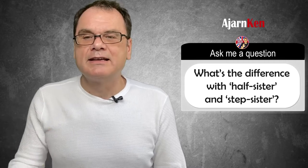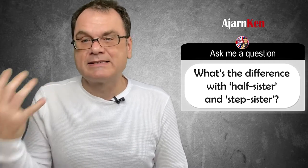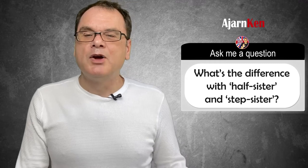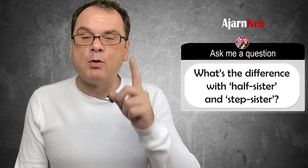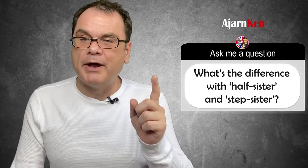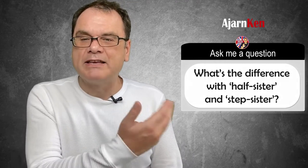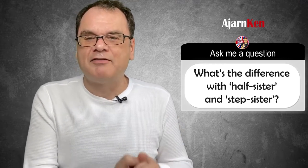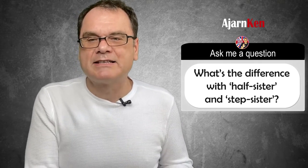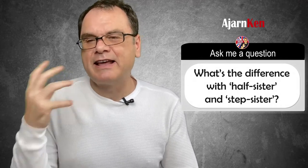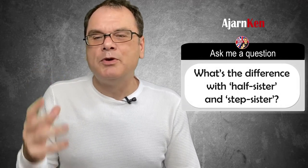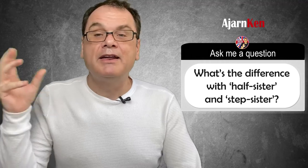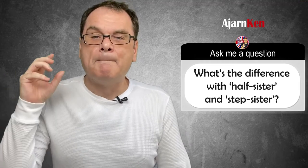Step-brother, step-sister, step-sibling. Half-brother, half-sister, half-sibling would be having one parent in common — we have the same father or we have the same mother. This would be your half-brother or half-sister. And step-sister, step-brother would be not direct family, but family through marriage.